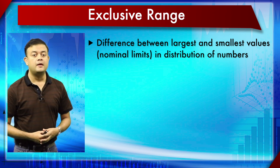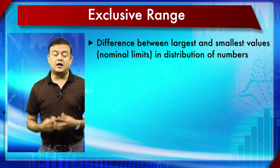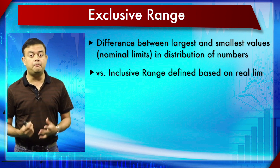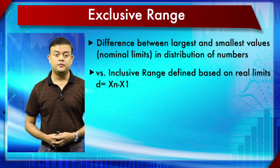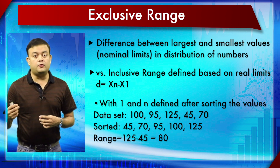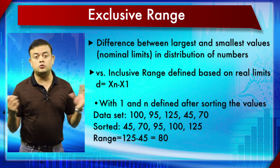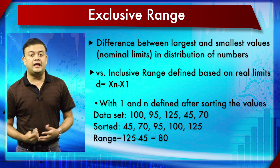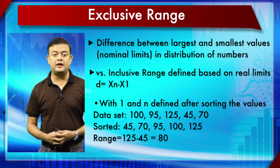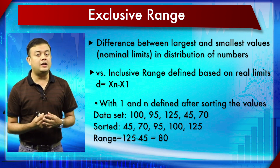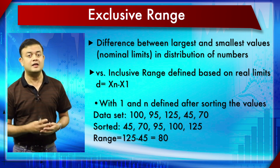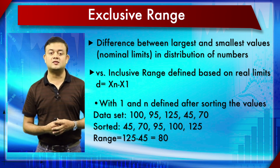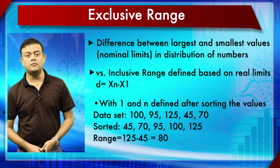The maximum and minimum are known as nominal limits. The inclusive range, described when discussing variations, is defined based on real limits, not nominal limits. Both ranges exist, but the exclusive range is what is normally meant. For example, a data set of 195, 135, 45, and 70 — sorted in ascending order — has a maximum and minimum whose difference gives a range of 80.